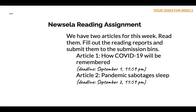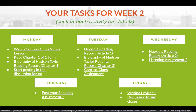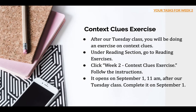The next task is the biography of Hudson Taylor, chapter two — you already know that. And the context clues assignment: after our Tuesday class, we will be doing an exercise on context clues. On Tuesday we're going to have a practice group exercise on how to use context clues, and after class you will have another individual exercise. Under reading section, go to reading exercises, click week two context clues exercise, and follow the instructions. It opens on September 1 at 11 a.m., after our Tuesday class — please complete it on the same day. Don't try to access it now because it only opens on September 1.